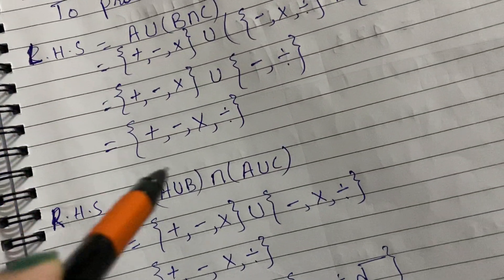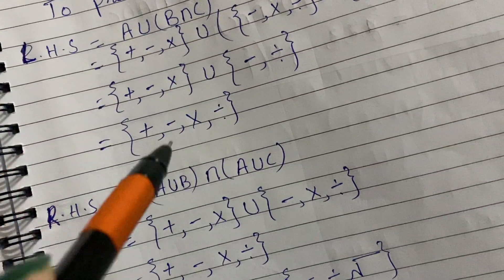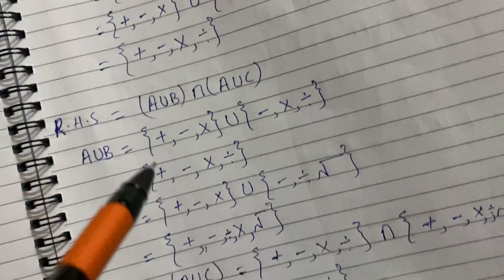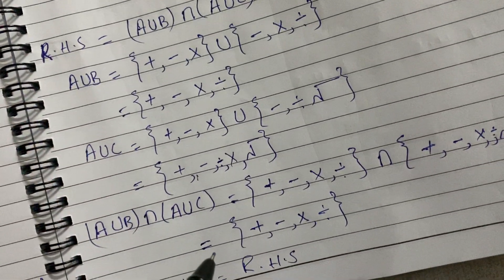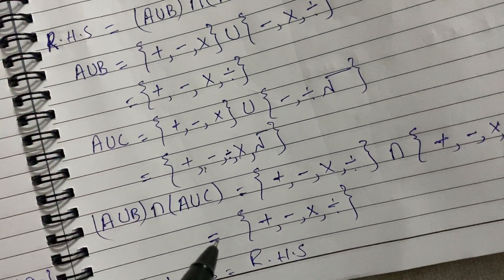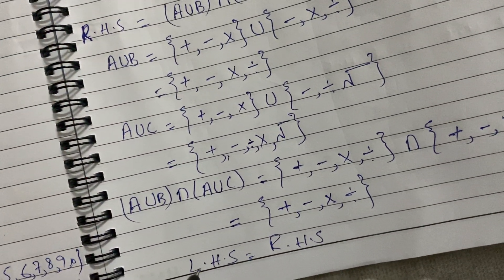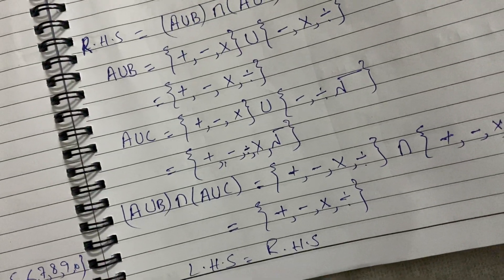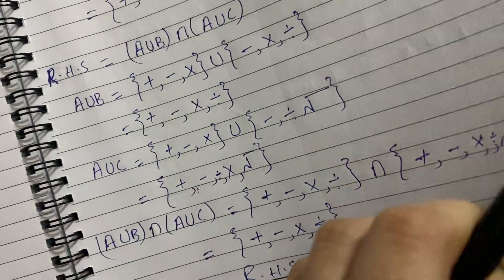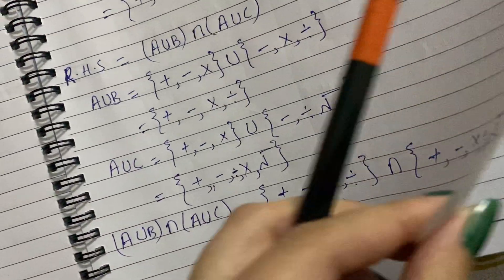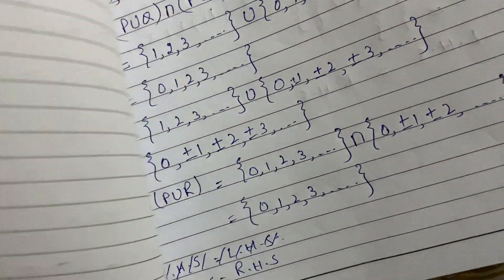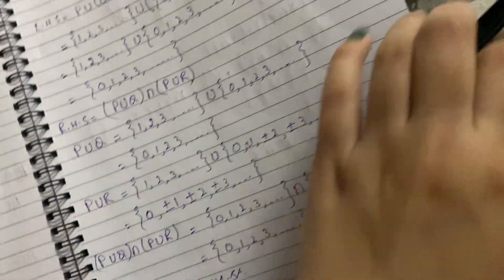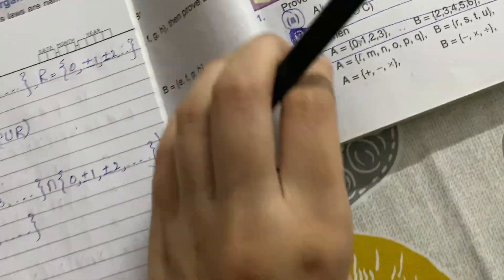The right hand side is {+, -, ×, ÷} and the left hand side is also {+, -, ×, ÷}. Both are the same, so we have proved that left hand side equals right hand side.